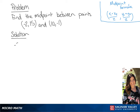We want to find the midpoint between points negative 2, 15, and 10, negative 1. So we're going to plug these points into our midpoint formula. So we have negative 2 plus 10 over 2, and 15 minus 1 over 2.